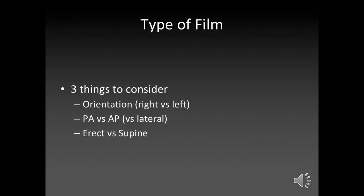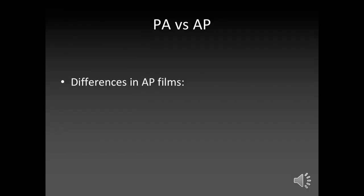The other thing is whether the patient is standing up or sitting down. PA versus AP is important because there are several differences in AP films. The first one you will commonly hear people mention is that you can't assess the size of the heart on an AP film. The reason you assess heart size is because you're looking for cardiomegaly — in someone who's got heart failure, their heart will fill up with blood and look massive. But it's very difficult to do that reliably on an AP film.